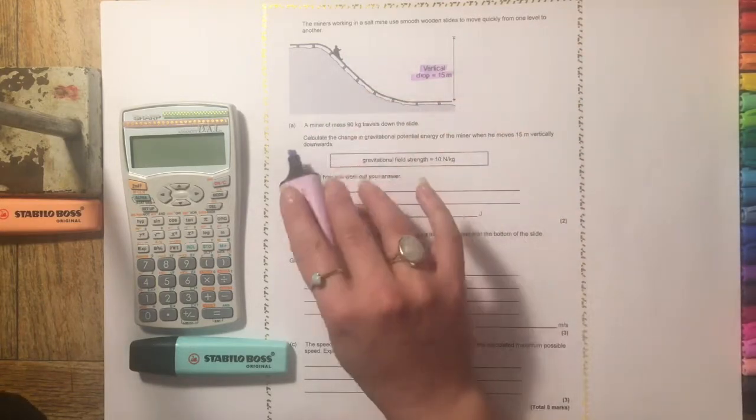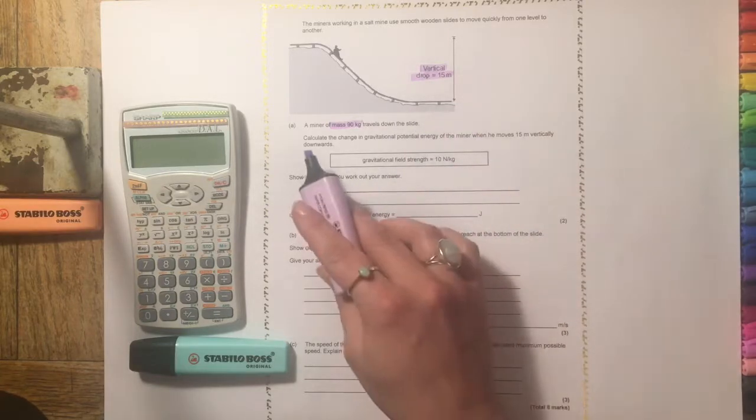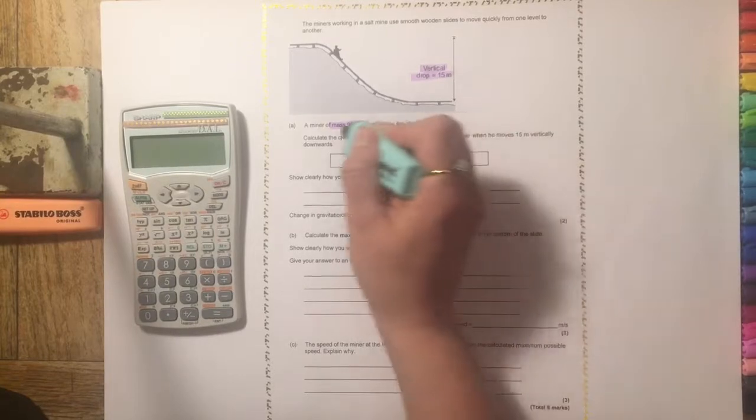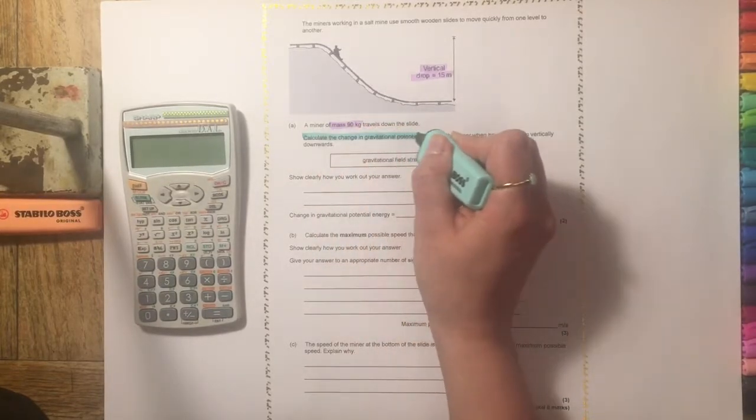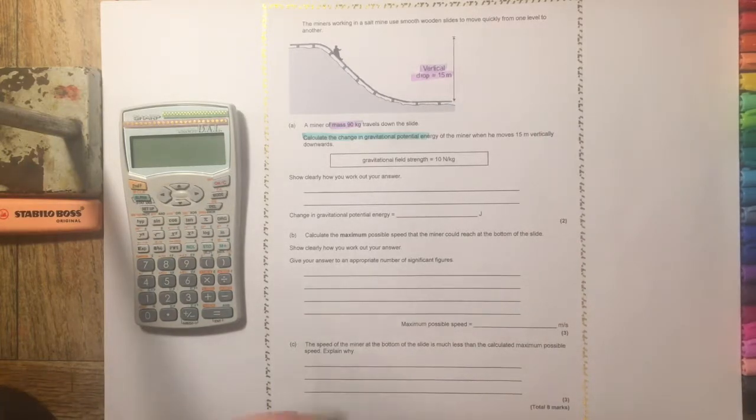It then tells us that there's a miner of mass 90 kilograms that travels down the slide. The next bit: calculate the change in gravitational potential energy of the miner when he moves 15 meters vertically downwards.